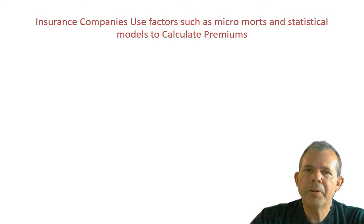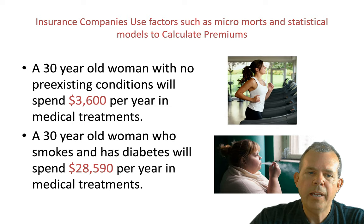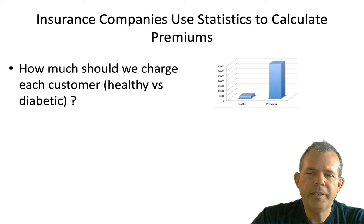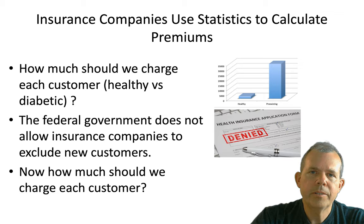The people who work on this kind of thing all the time are insurance companies — they have to calculate premiums and life insurance. They know that a 30-year-old woman with no pre-existing conditions will spend about $3,600 a year in medical treatments. However, the same 30-year-old who has diabetes and smokes will spend $28,000 a year. The federal government changed the rules with Obamacare: you cannot deny insurance to people with pre-existing conditions. As a statistician, the question becomes how much to charge each customer and how to spread that risk around.